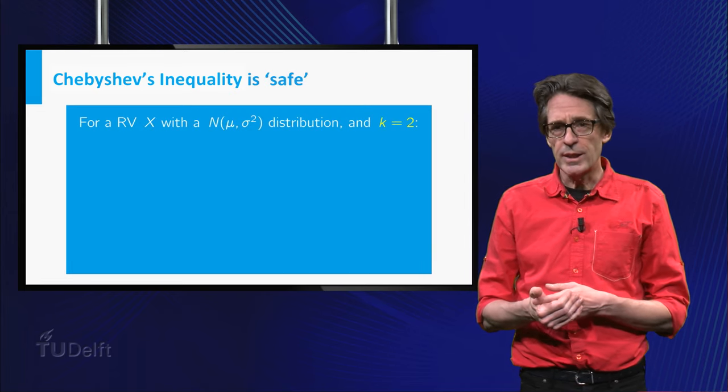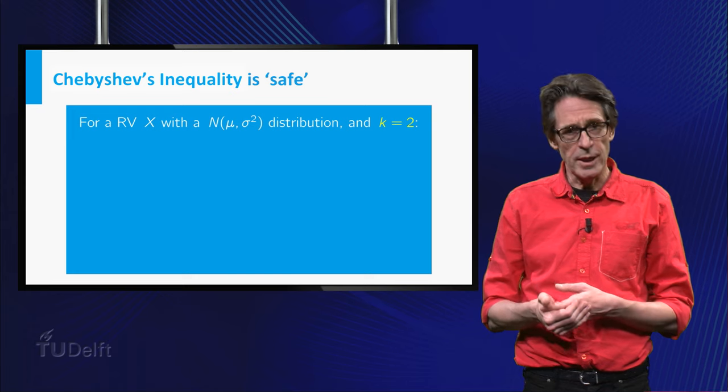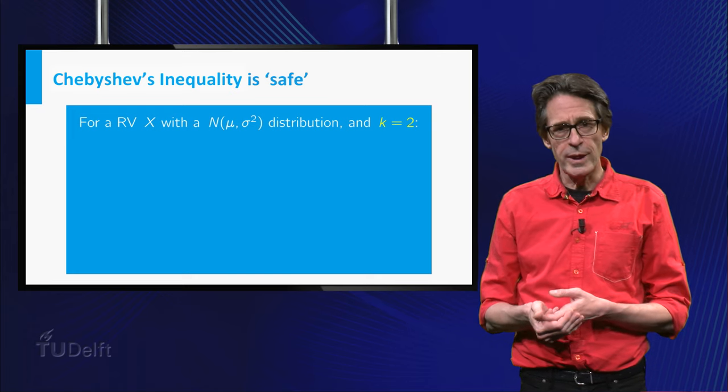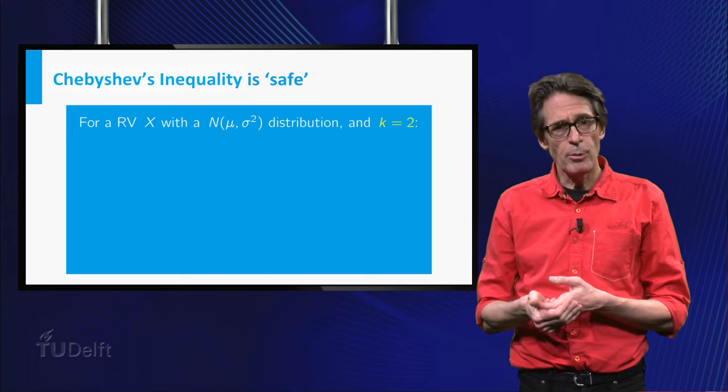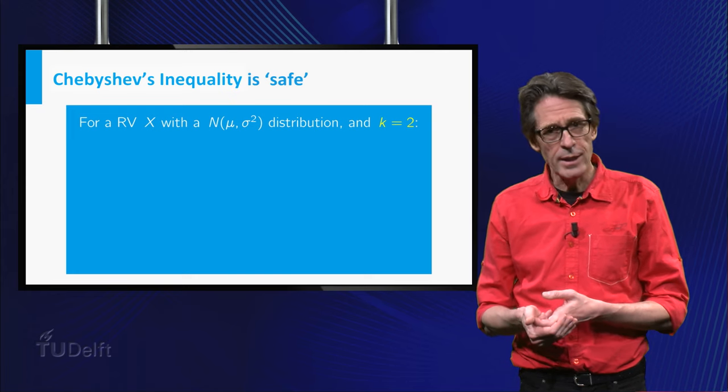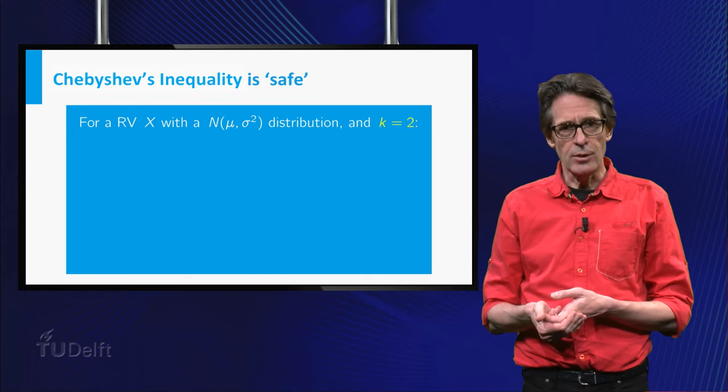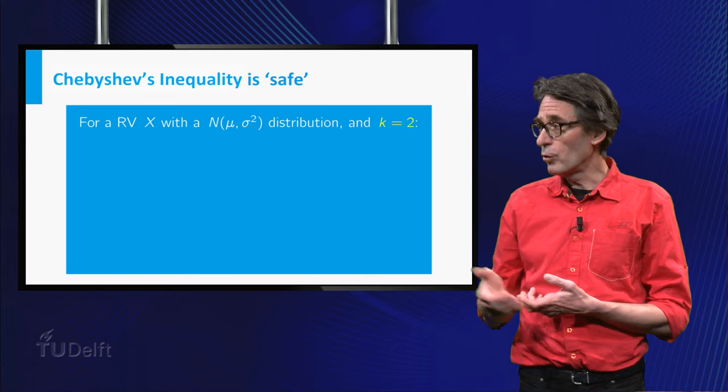Second, suppose X has a normal distribution with expectation μ and variance σ². In this case, the probabilities of outcomes more than k times σ from μ can be calculated explicitly. For instance, for k equals 2,